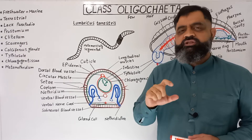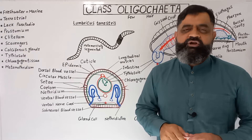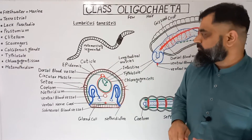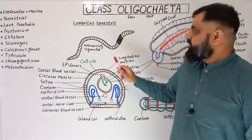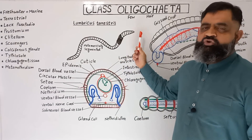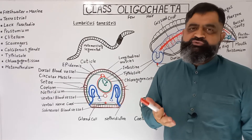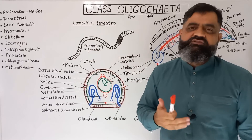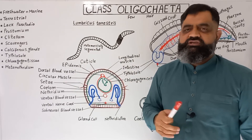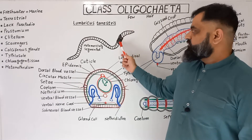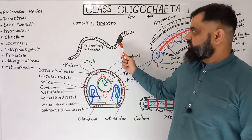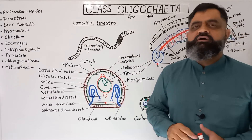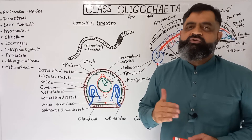They lack parapodia because they would hinder burrowing activity. Instead, they contain setae made up of chitin, which help in locomotion. On the front side there is a mouth containing a structure known as prostomium, which contains sensory organs. On the posterior side there is an anus used for excretion of undigested food. On the surface of the body there is a structure known as the clitellum, which secretes mucus and helps in copulation during sexual reproduction.